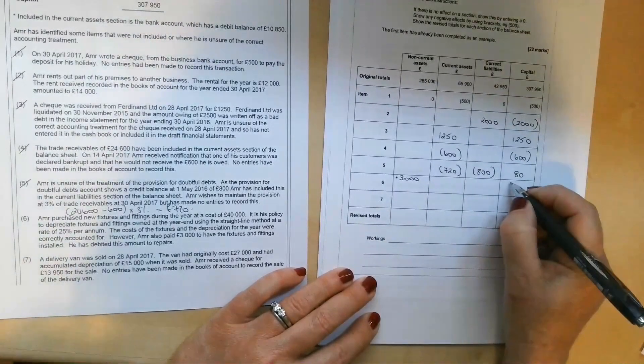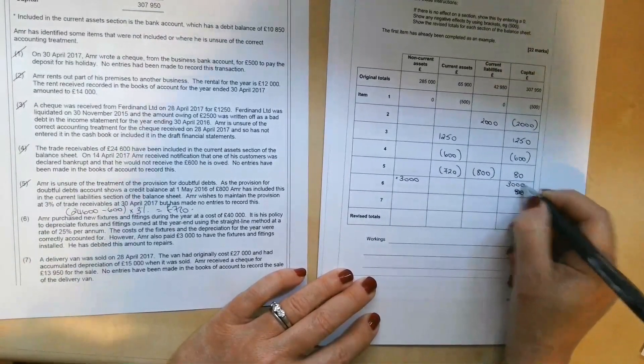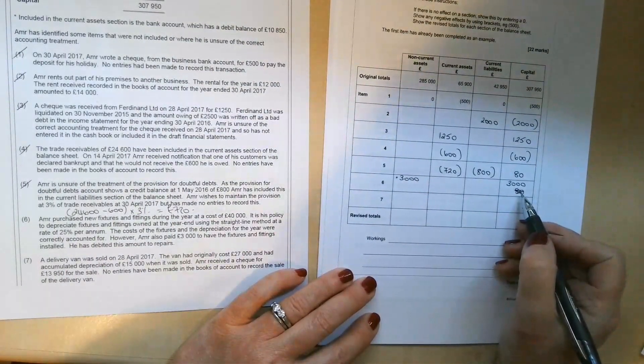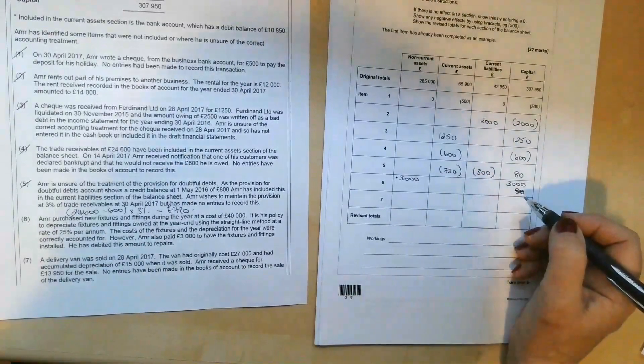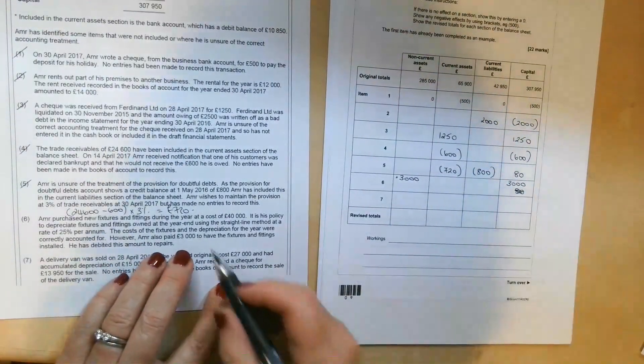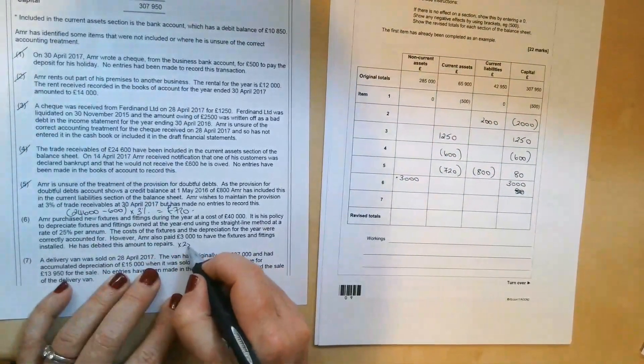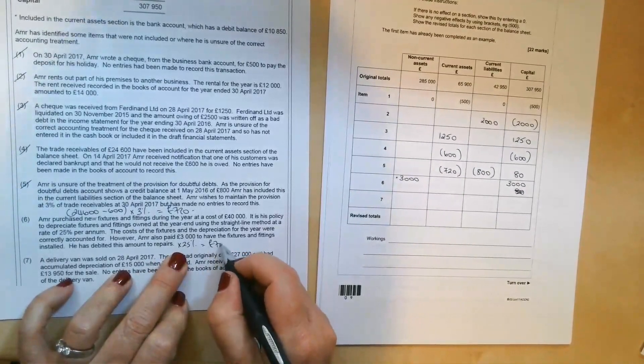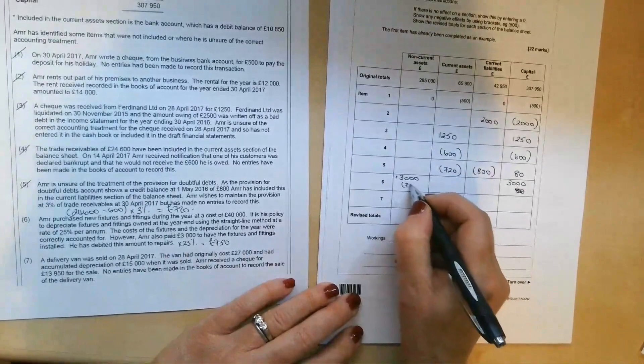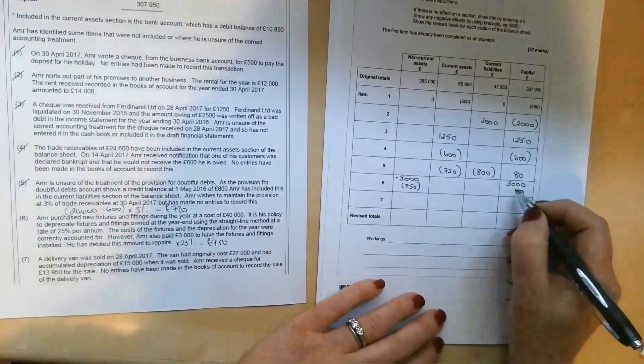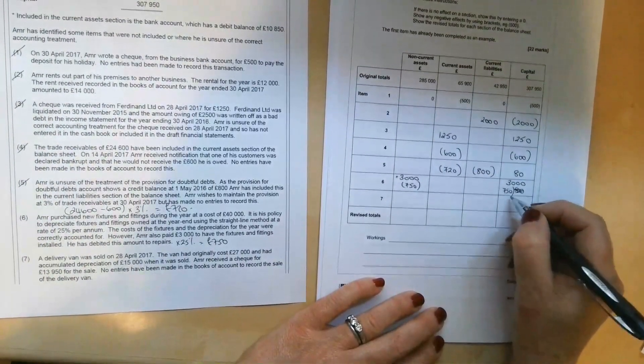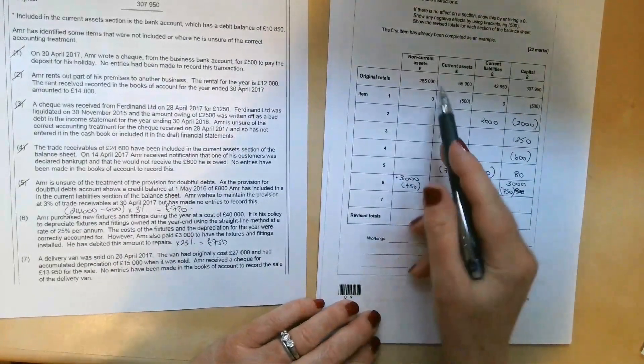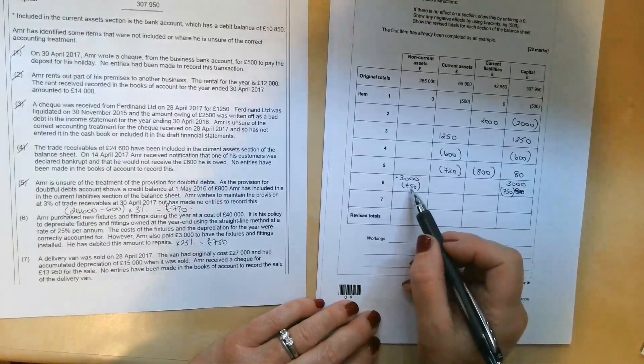We're taking it out of repairs. That's going to actually increase our profit. So we're adding £3,000 into the capital account for the additional profit. But we also need to do 25% of that as depreciation. So 25% of £3,000 is £750. So we're going to be taking that away, £750 off of there and £750.